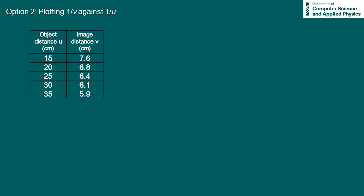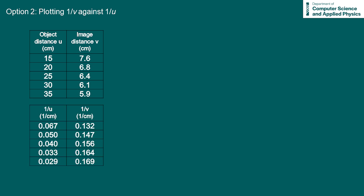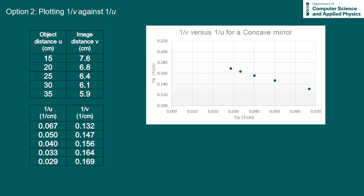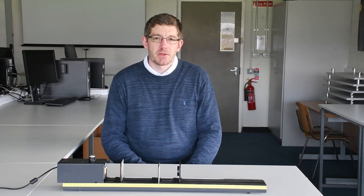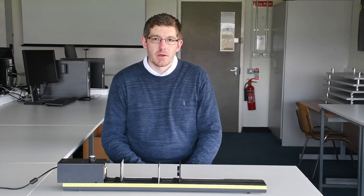To plot our graph we take our experimental data and calculate the corresponding one over u and one over v values, then plot one over v on the y-axis and one over u on the x-axis. A line of best fit is included, and from the equation of this line we can see that the slope is minus 0.986, which is close to the expected value of minus one. The intercept of the line is 0.1968. Since the intercept equals one over f, solving for the focal length we get a value of 5.1 centimeters. And that's how we determine the focal length of a concave mirror.